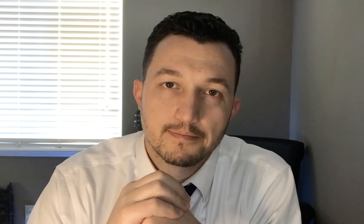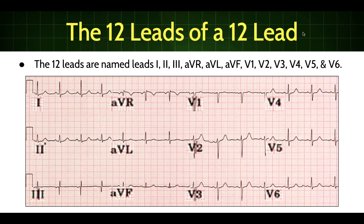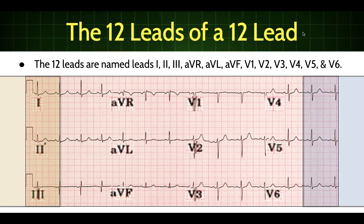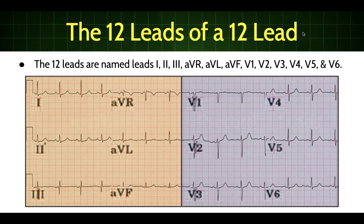The standard EKG consists of 12 leads, and each lead is determined by the placement and orientation of electrodes on the patient's body. The leads are named: leads 1, 2, 3, AVR, AVL, AVF, V1, V2, V3, V4, V5, and V6. We can break these into two categories: limb leads (1, 2, 3, AVR, AVL, AVF) and precordial leads, sometimes called chest leads.